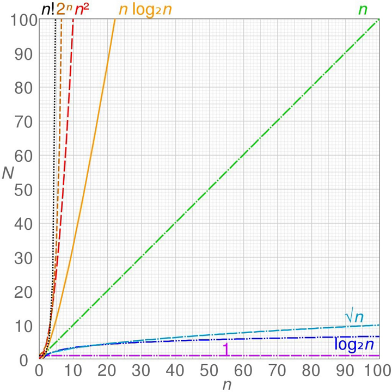Where n is the input size in units of bits needed to represent the input. Algorithmic complexities are classified according to the type of function appearing in the big O notation. For example, an algorithm with time complexity O(n) is a linear time algorithm, and an algorithm with time complexity O(n^α) for some constant α > 1 is a polynomial time algorithm.